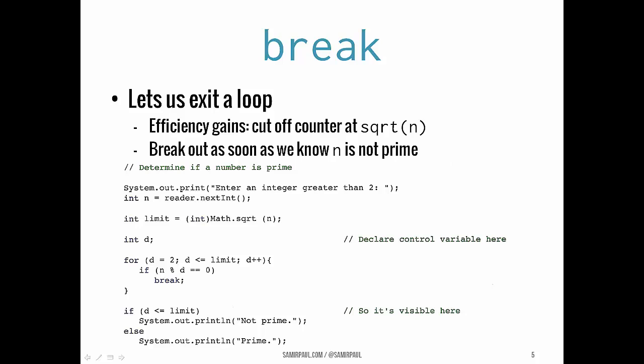There are a couple things we change here. First, instead of cutting off our search for a proper divisor at n divided by 2, we know that we can actually stop looking at the square root of n — that's our new limit, letting us look at fewer numbers. Also, we declare a counter variable outside of the for loop. That's important because it means we can change its value inside the for loop, and after we exit the loop it will still be visible to us — it'll still exist.